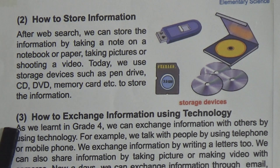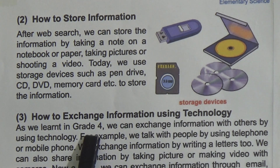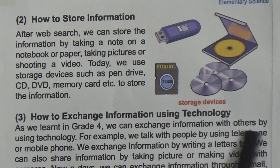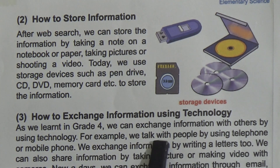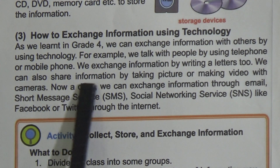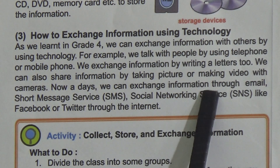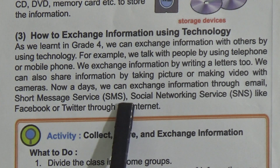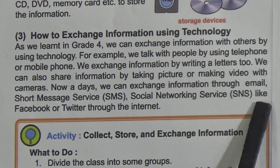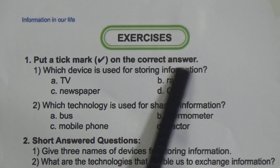The next point is how to exchange information using technology. As we learned in Grade 4, we can exchange information with others by using technology. For example, we talk with people by using telephone or mobile phone. We can exchange information by writing a letter too. We can also share information by taking pictures or making videos with cameras. Nowadays we can exchange information through email, short message service (SMS), and social networking service (SNS) like Facebook or Twitter through the internet.